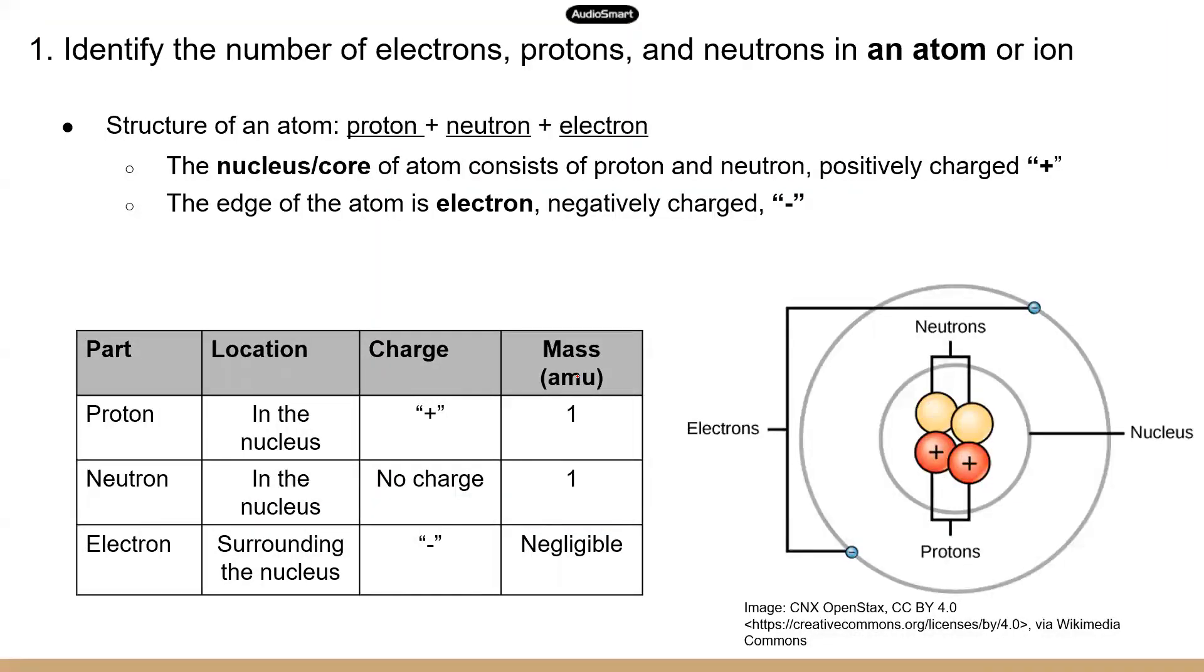Alright, now let's look at the first one, how to identify the numbers of subatomic particles in an atom or an ion. Now, I have talked about this in detail in the video for TEAS 6, so I'm just going to do a quick recap. For an atom, there are three subatomic particles. Protons and neutrons are located in the center of the atom, and this center part is called the nucleus or the core of an atom.